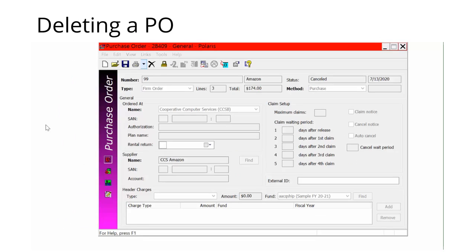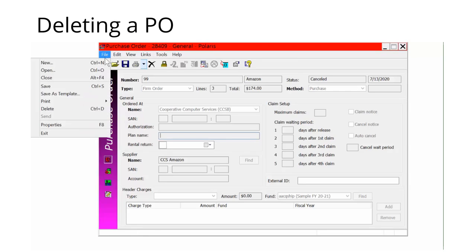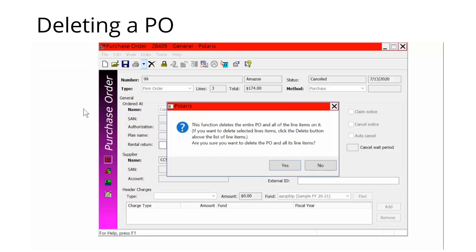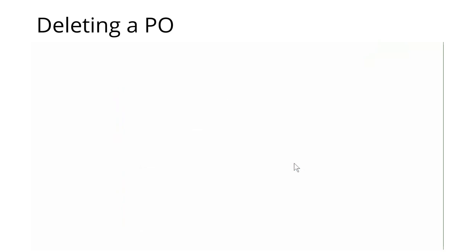To delete a canceled purchase order, open the purchase order work form for the canceled order. Select File and Delete. A message will ask if you're sure you want to delete the PO. Click Yes to confirm. When the purchase order is deleted, links to various records — such as the supplier record, invoices, and funds — are broken.